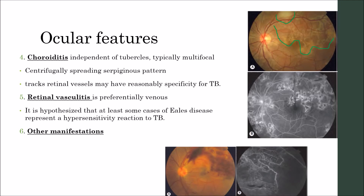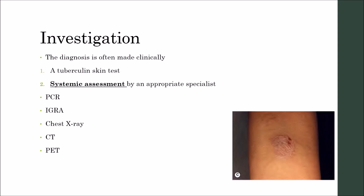Other manifestations include reddish-brown eyelid nodules called lupus vulgaris, conjunctivitis, phlyctenulosis, interstitial keratitis, scleritis, exudative retinal detachment, and optic neuropathy, which may include neuroretinitis.